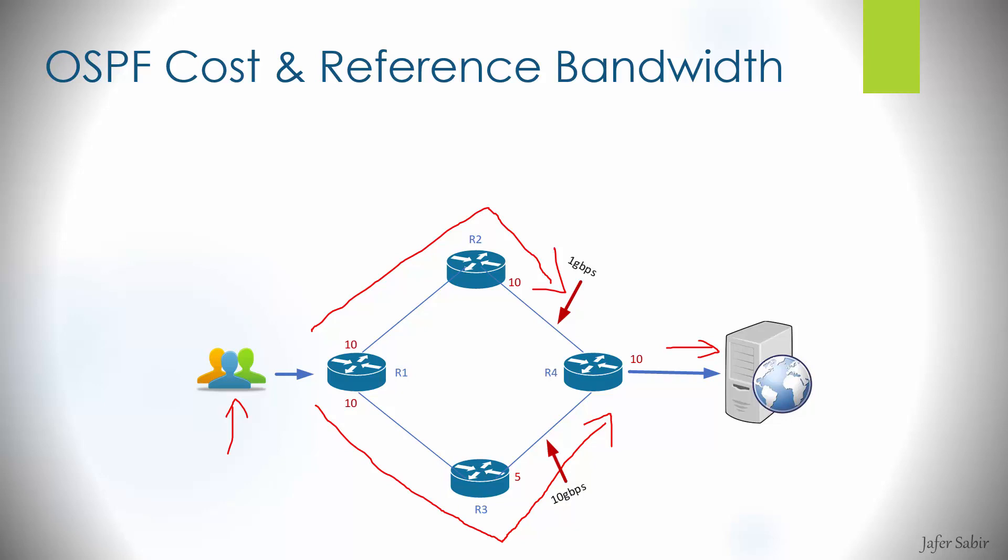The cost is calculated automatically through the use of the auto cost command, where you provide something known as the reference bandwidth. By default, OSPF recognises anything more than 100MB as a cost of 1, but with the latest technology in fibre cabling and interface speeds exceeding 100GB — possibly exceeding 400GB — that's going to be an issue, as everything above 100MB will have the same cost. So the reference bandwidth needs to be increased, as you don't want a 1GB link and a 40GB link to both have a cost of 1, otherwise OSPF won't be able to determine the faster preferred path. It needs to be adjusted based on the maximum link speed in your network.